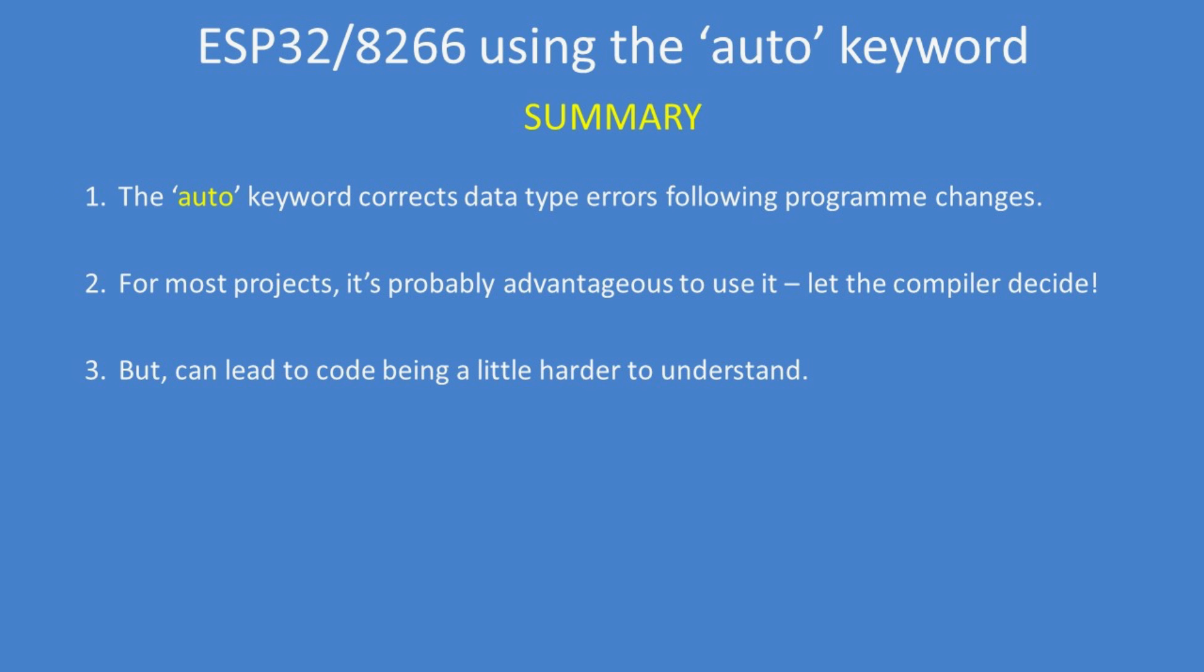In summary, the auto keyword can correct data type errors for you. When code changes or libraries change, it helps maintain uniformity in variable type definitions. For most practical purposes, it's advantageous to use it—let the compiler decide for you.